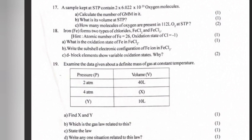18. Iron (Fe) forms two types of chlorides, FeCl₂ and FeCl₃. Hint: Atomic number of Fe equals 26, oxidation state of Cl equals -1. a) What is the oxidation state of Fe in FeCl₂? b) Write the subshell electronic configuration of Fe ion in FeCl₃. c) D block elements show variable oxidation states. Why?